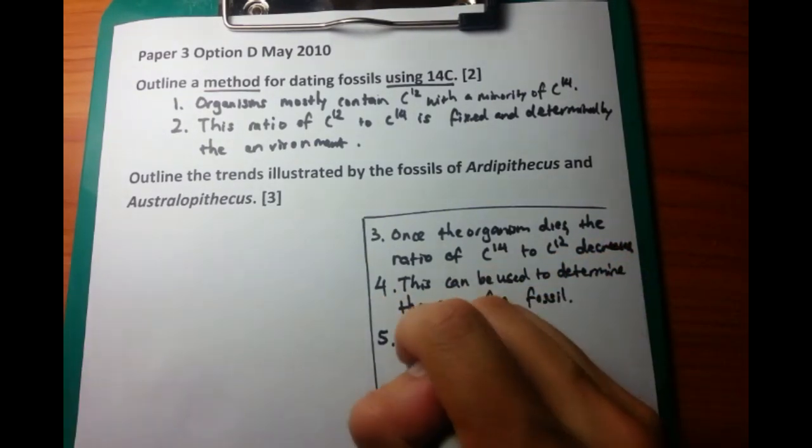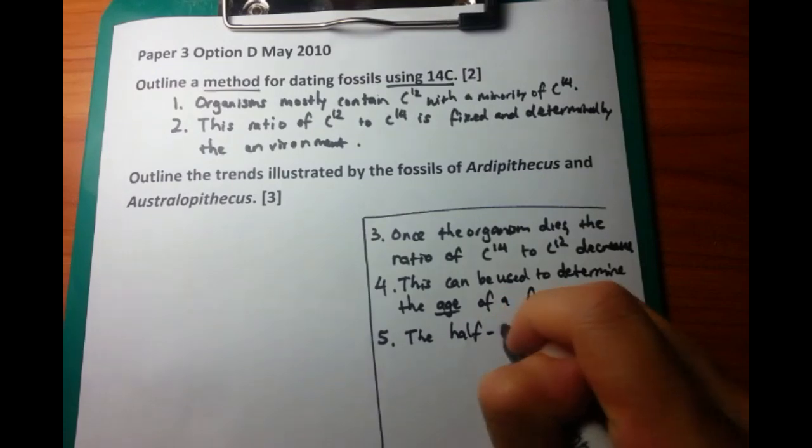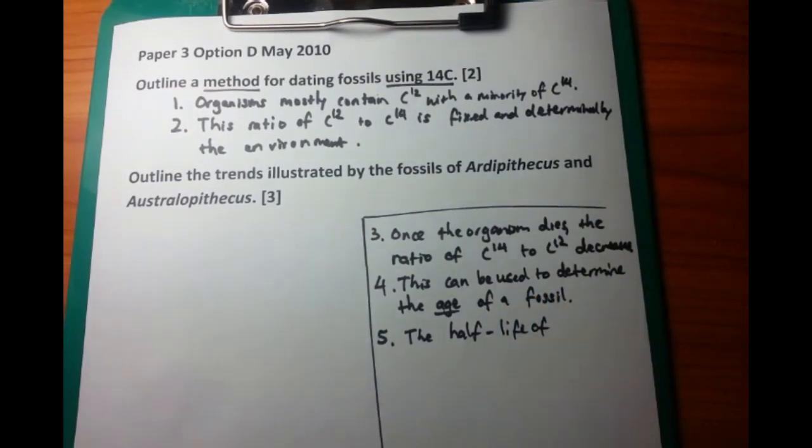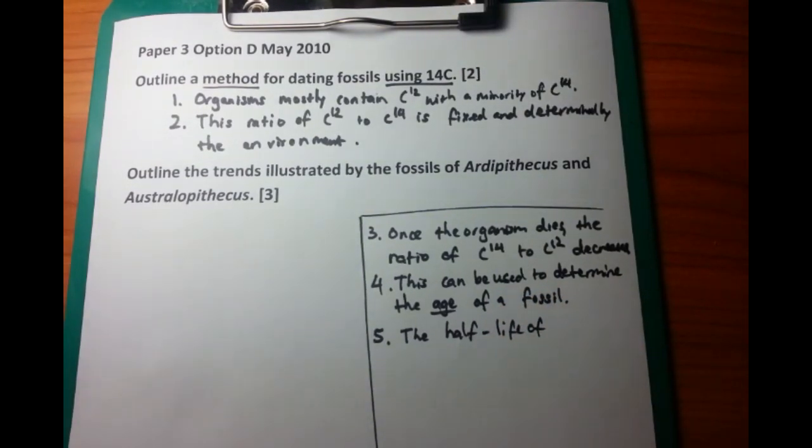And this principle can be used to determine the age of a fossil. The less carbon-14 there is, relative to carbon-12, the older the specimen is.